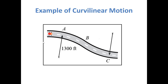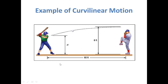Here are some examples of curvilinear motion. This is a curved path and a vehicle is following this path from point A to point C — you can see the curve here. In another example, a baseball player hits a ball and that ball travels along a curved path. At one position the height of the ball is less than at another position.